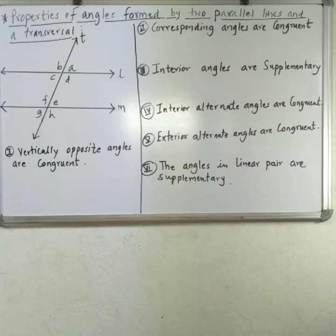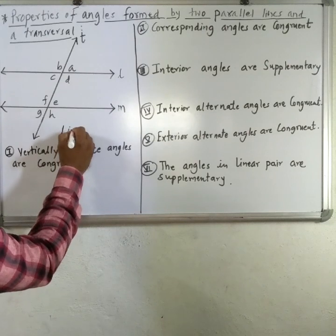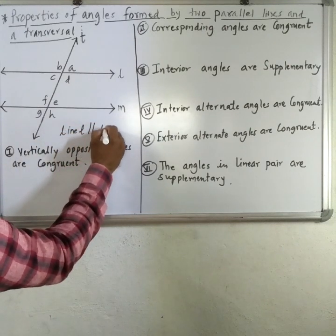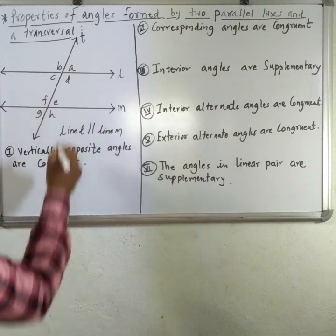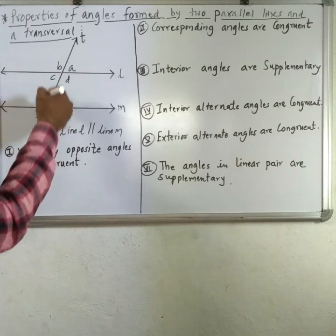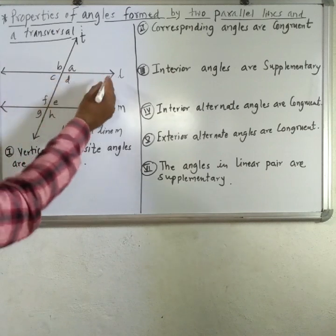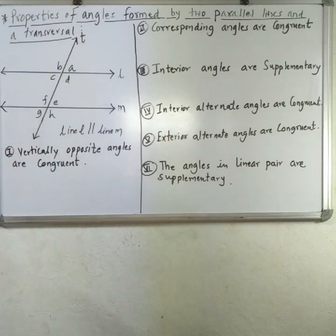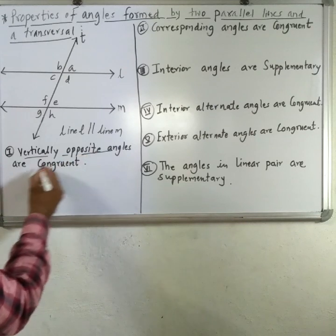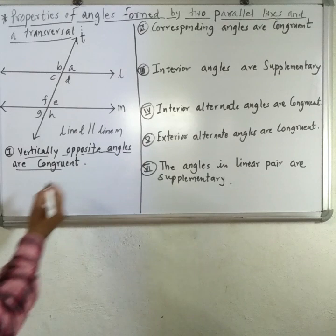Now we will look at the properties of angles formed by two parallel lines and a transversal. Line L is parallel to line M, and line T is the transversal, forming eight pairs of angles in all. The first property: when two parallel lines are intersected by a transversal, vertically opposite angles are congruent.